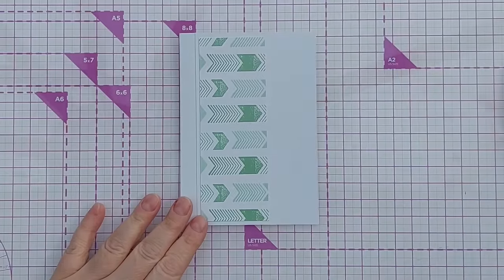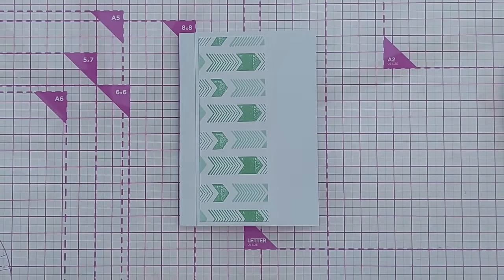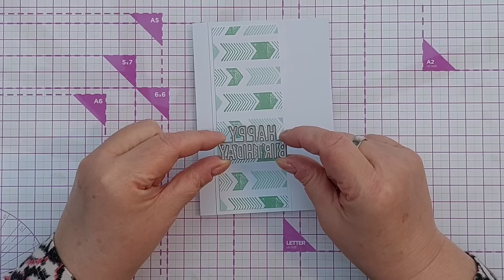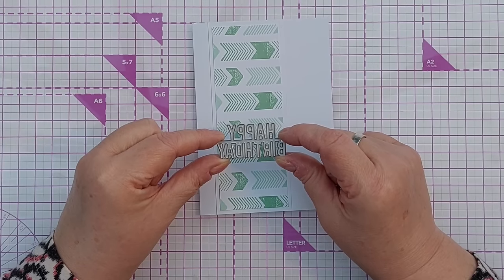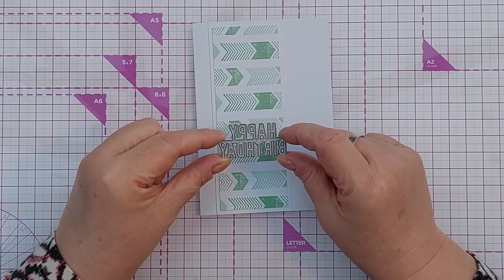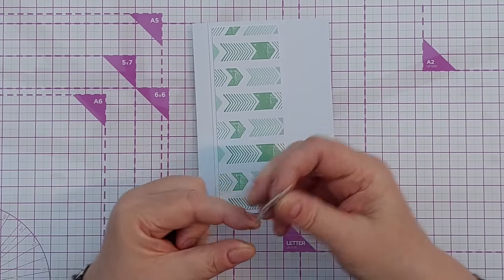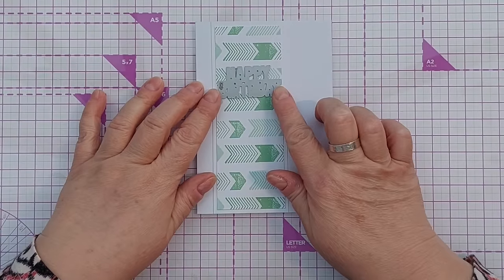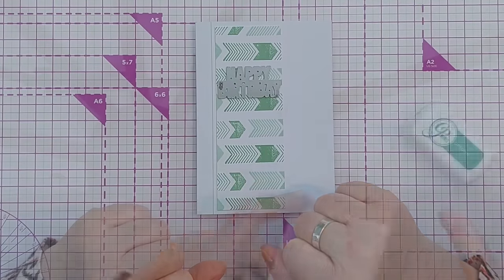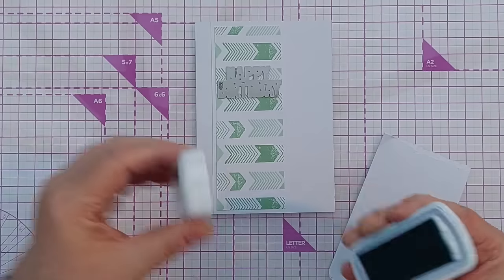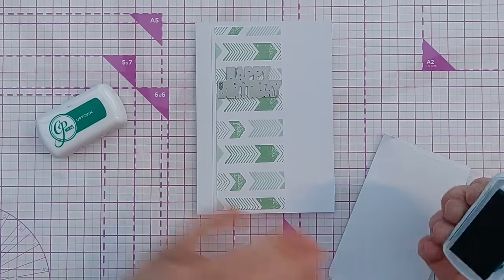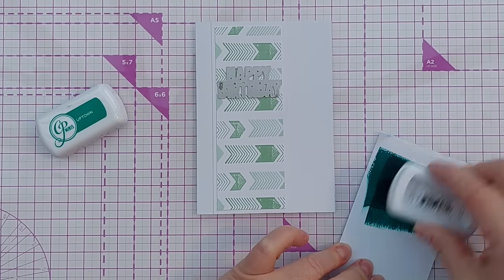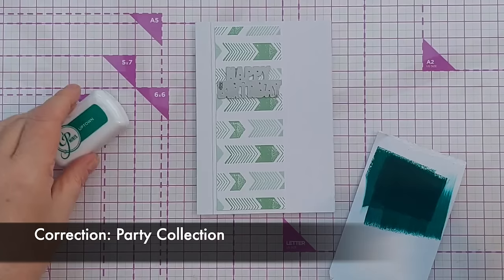So I'll have to snip off a bit but I'm going to pop it on about there I think. And there we have a nice light green panel for my sentiment. I'm thinking this happy birthday die because it's quite a blocky capital font which I think goes well with the geometric pattern and it just happens to fit really nicely there.